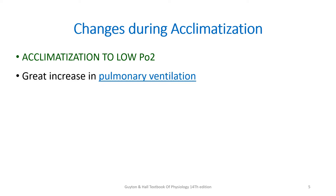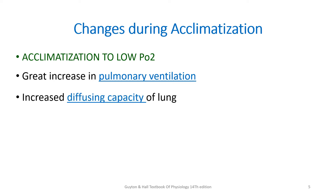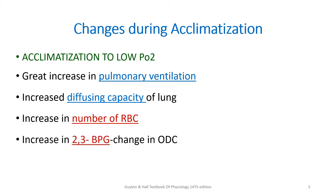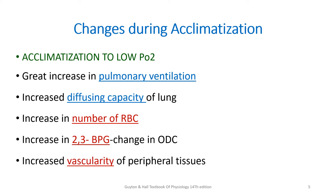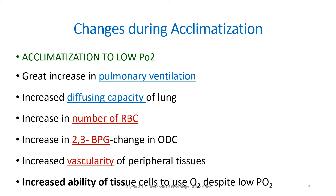After writing the definition, we can write about the changes during acclimatization at high altitude. First, there will be a great increase in pulmonary ventilation, which allows more oxygen to reach the lungs. Then there is increased diffusing capacity of the lung, so all the oxygen that has reached the lungs can easily diffuse into the blood. In the blood, there is an increased number of RBCs. And to make the release of oxygen at the tissue level easier, there is increased 2,3-BPG. There is also increased vascularity of the peripheral tissues. All these changes ultimately increase the ability of the tissue cells to use oxygen despite low PO2.